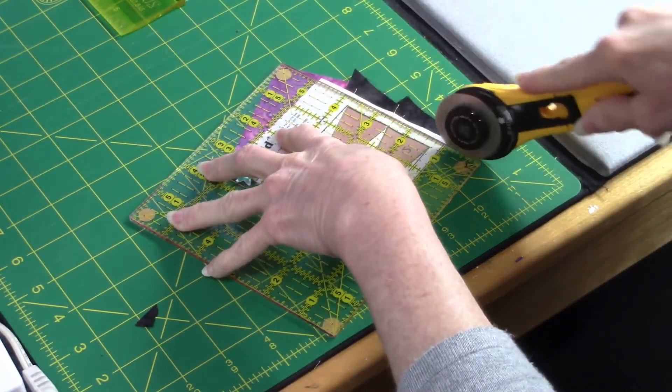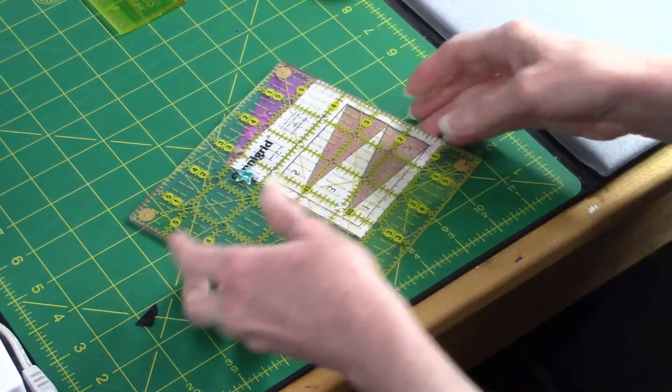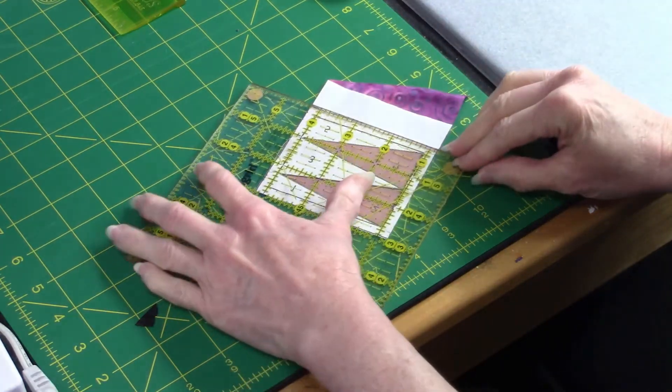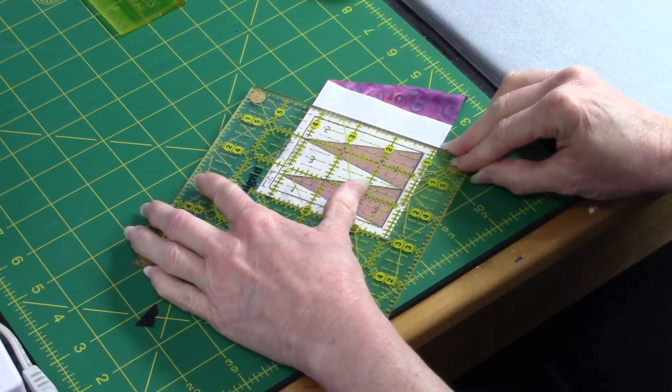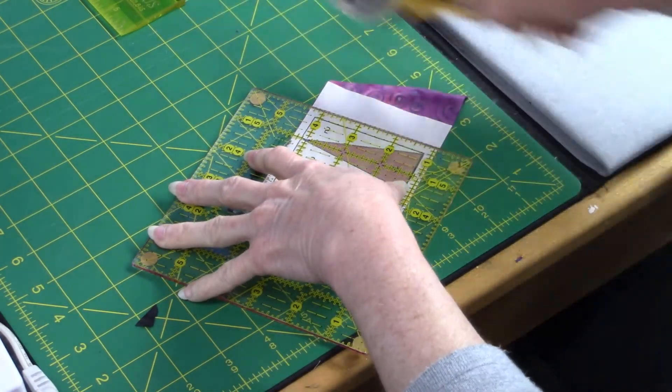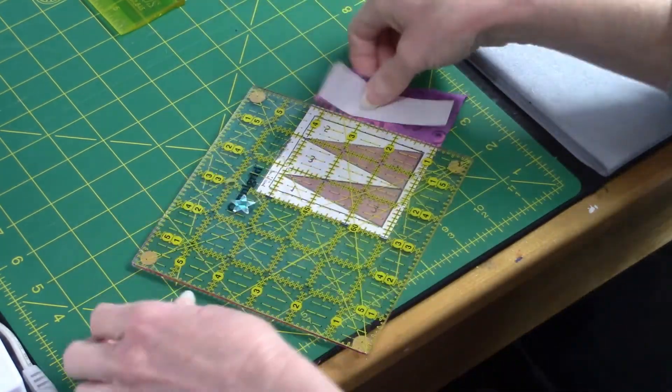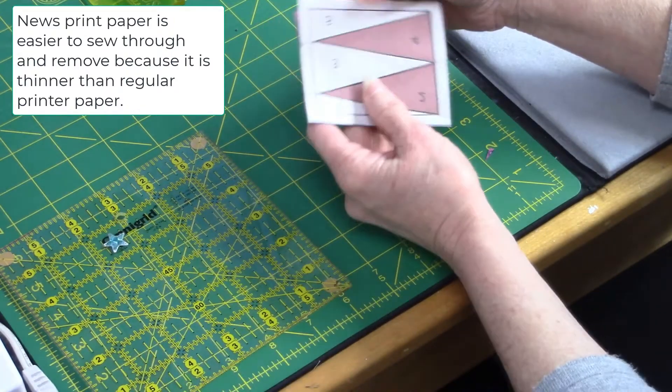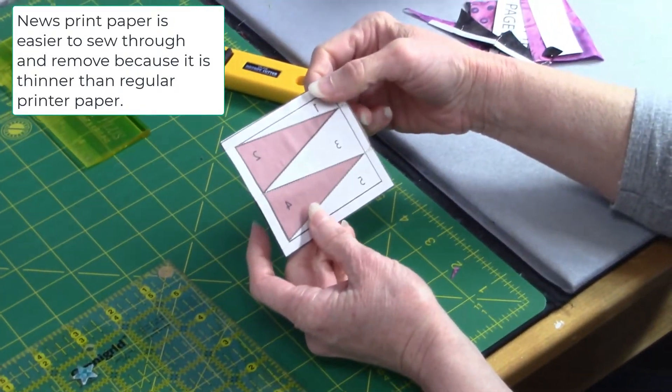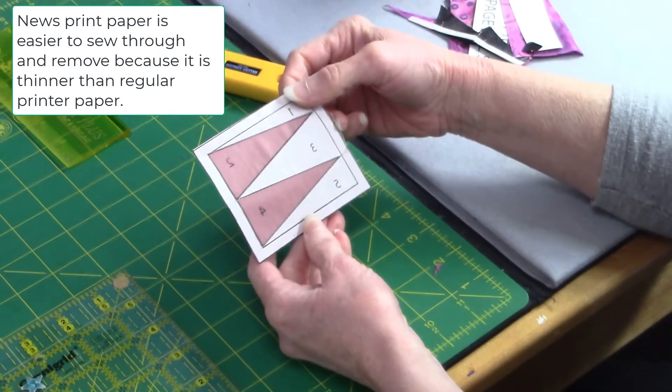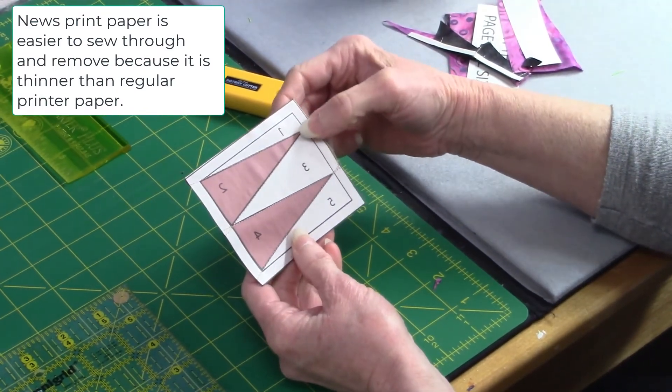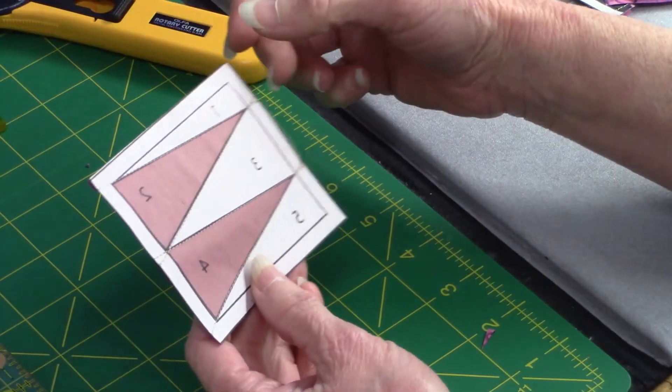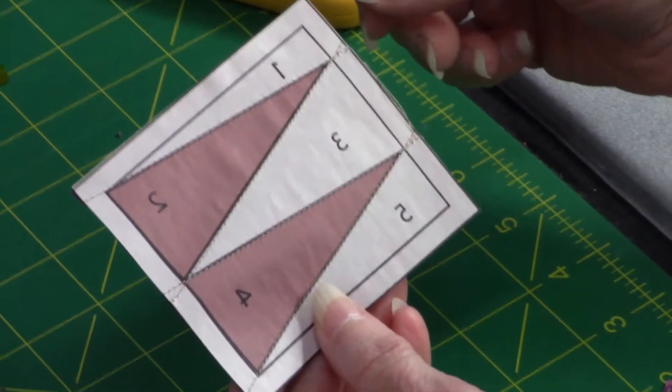And the paper we used here is newsprint. So it will either be in your pattern if you purchased it from us, or if you've got a download pattern then you can purchase this newsprint paper like on Amazon and different places, quilt shops, and you can run that through your regular printer. And that files will be in your download pattern.